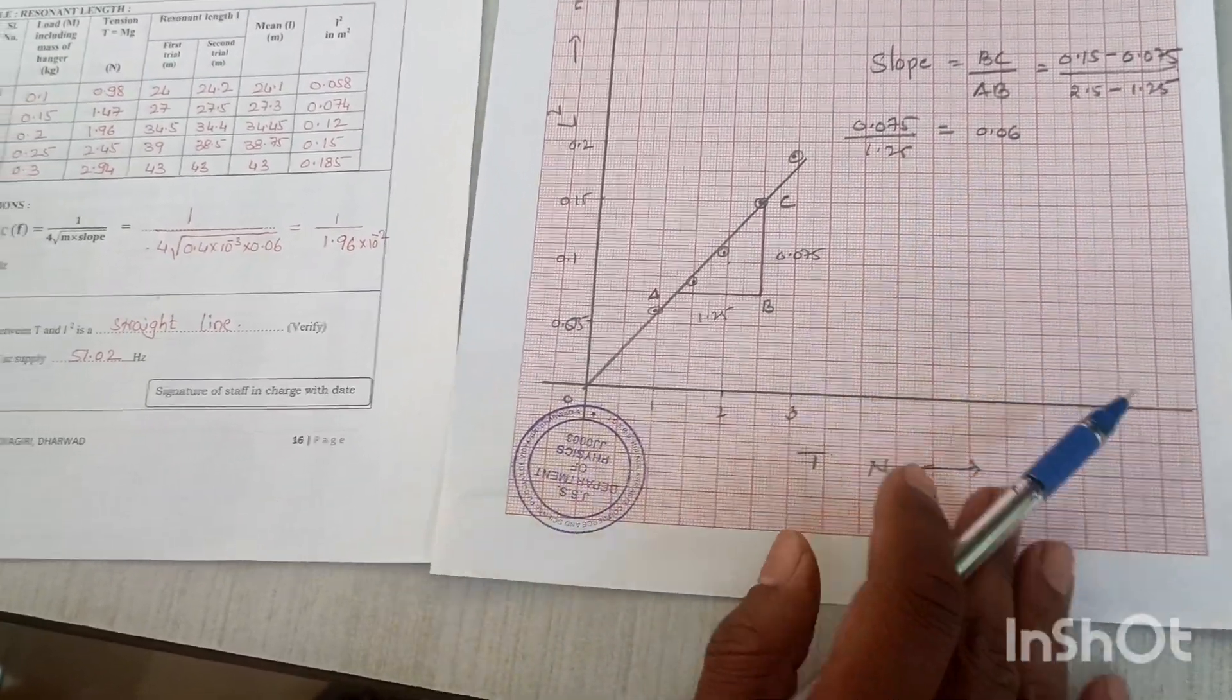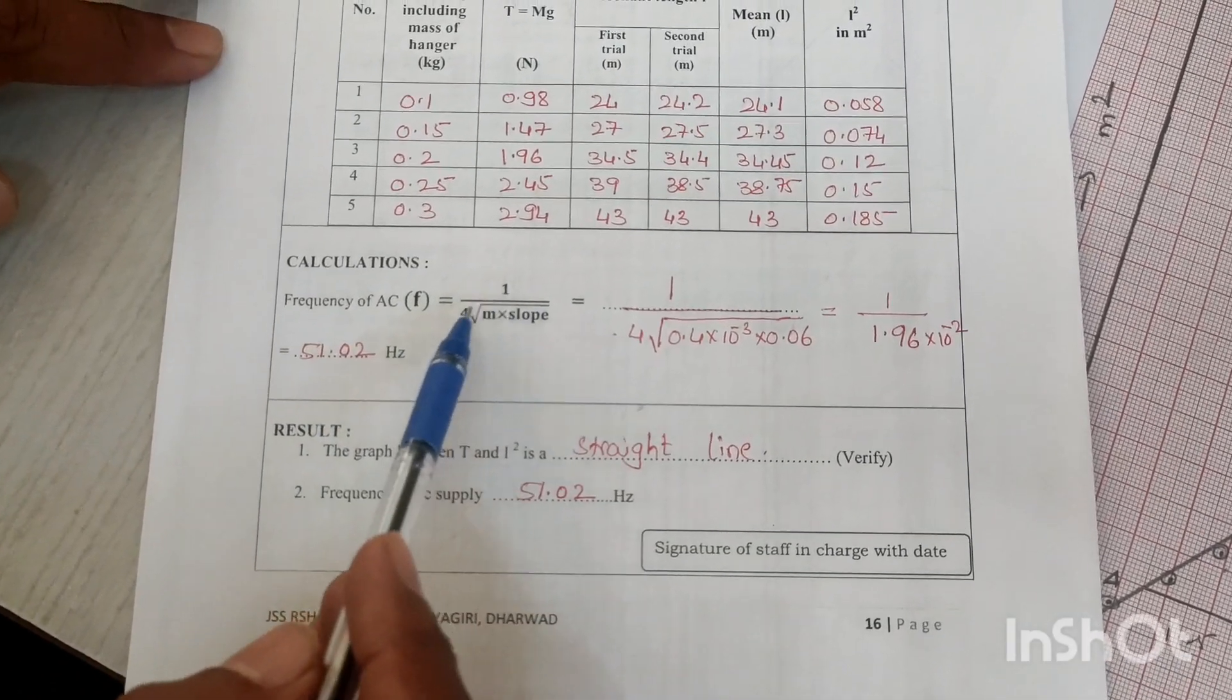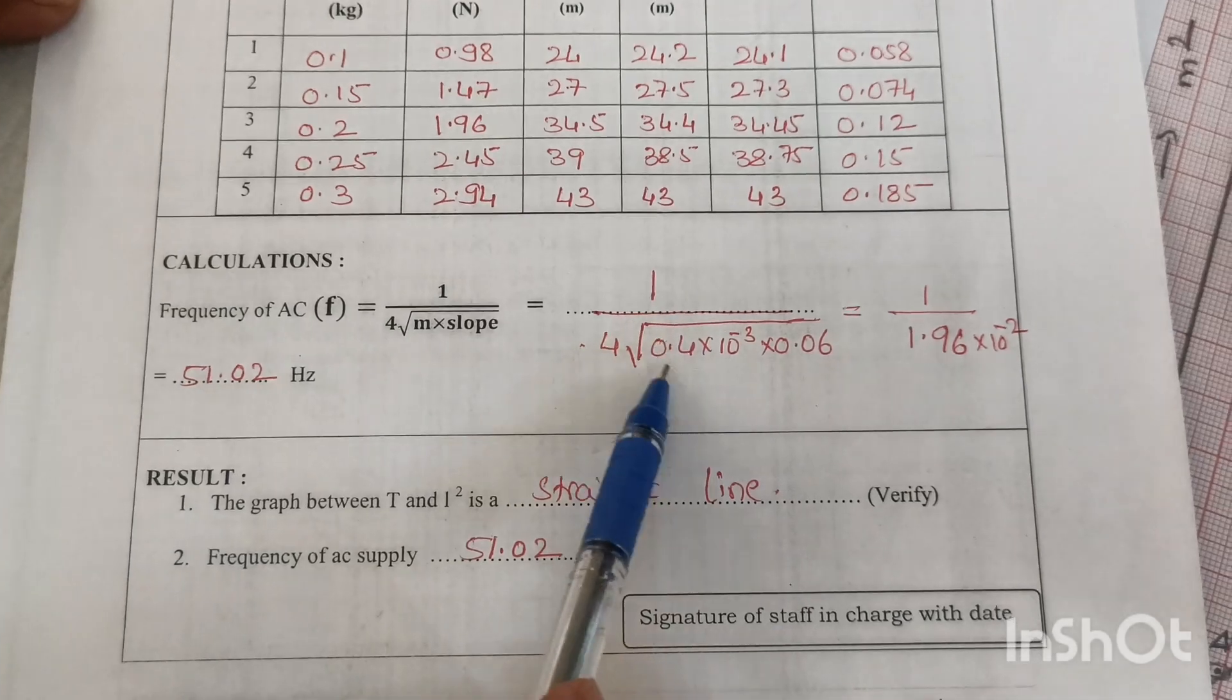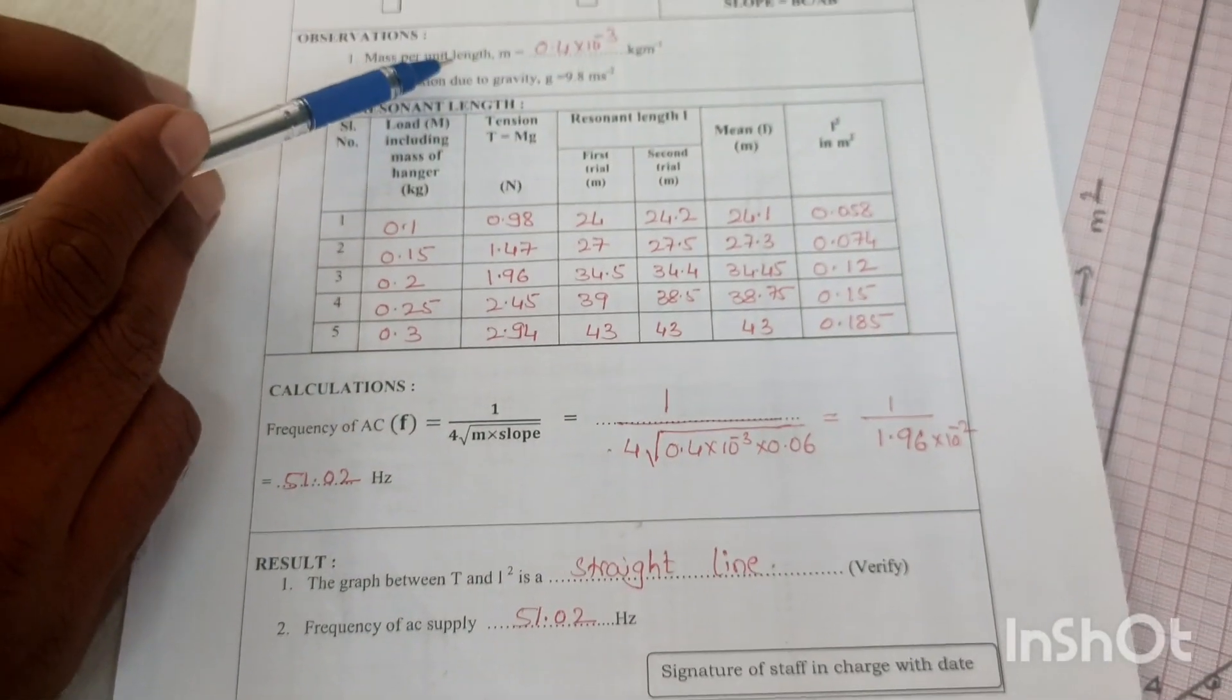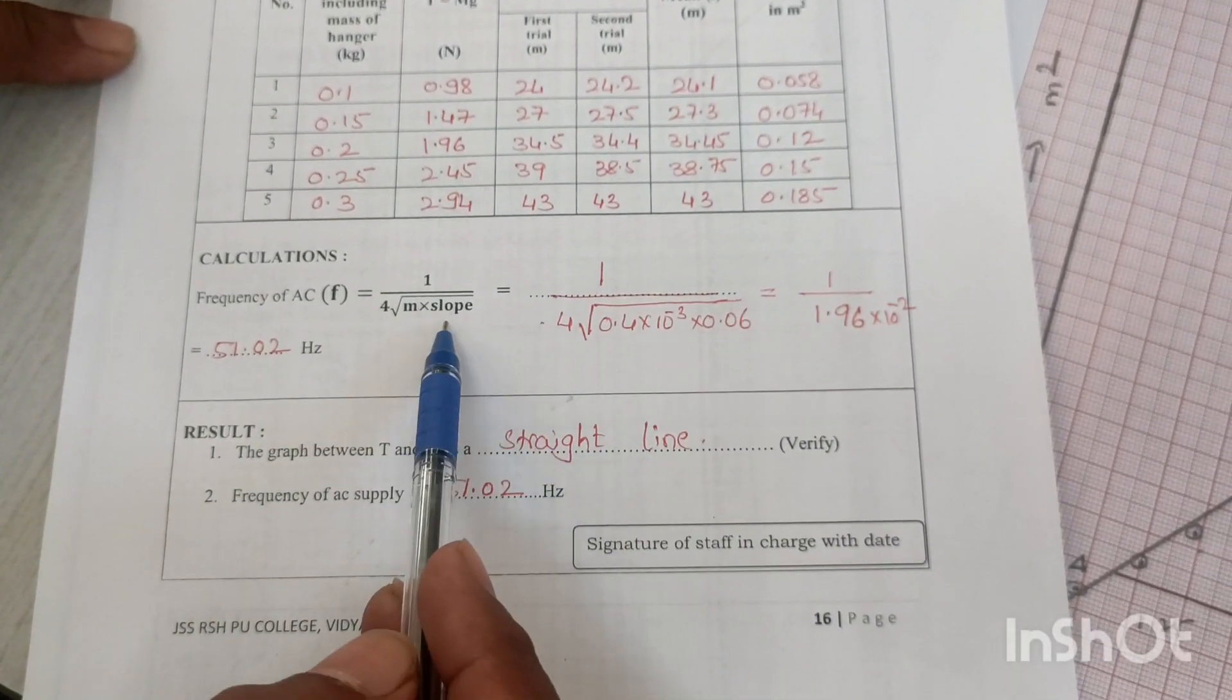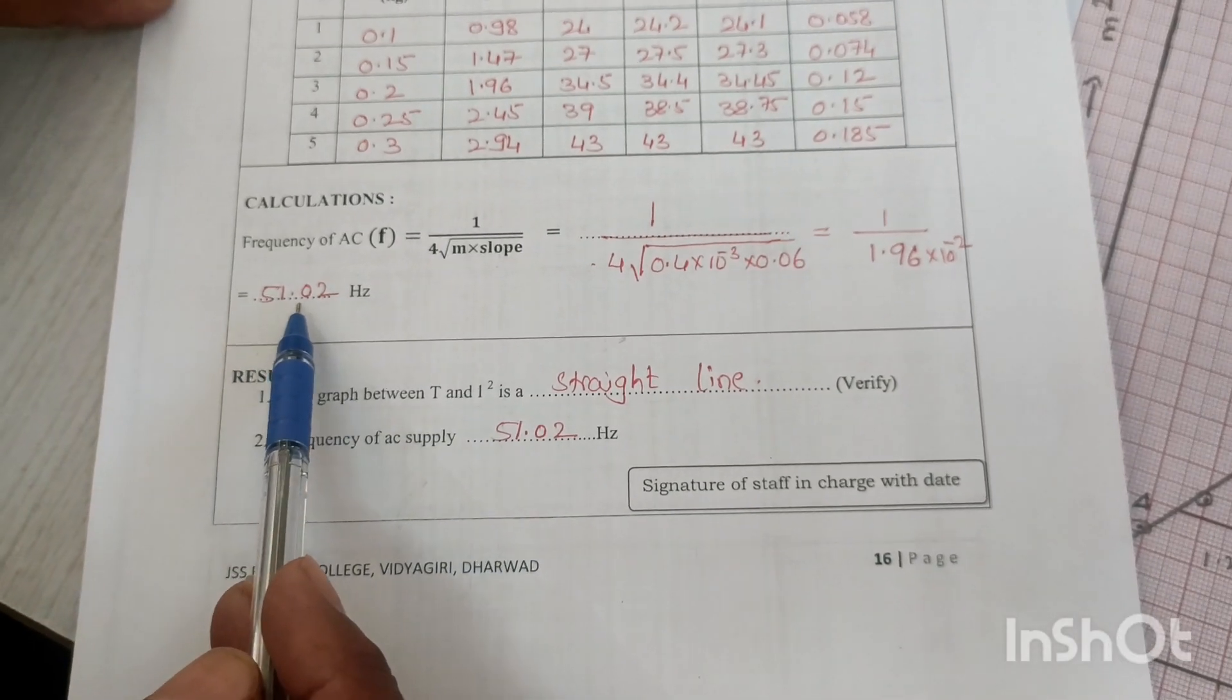By substituting the slope value into the equation, frequency of AC equals 1 over 4 times square root of M times slope, where M is mass per unit length of the wire. Using the experimentally calculated slope value, the frequency is found to be 51.02 hertz.